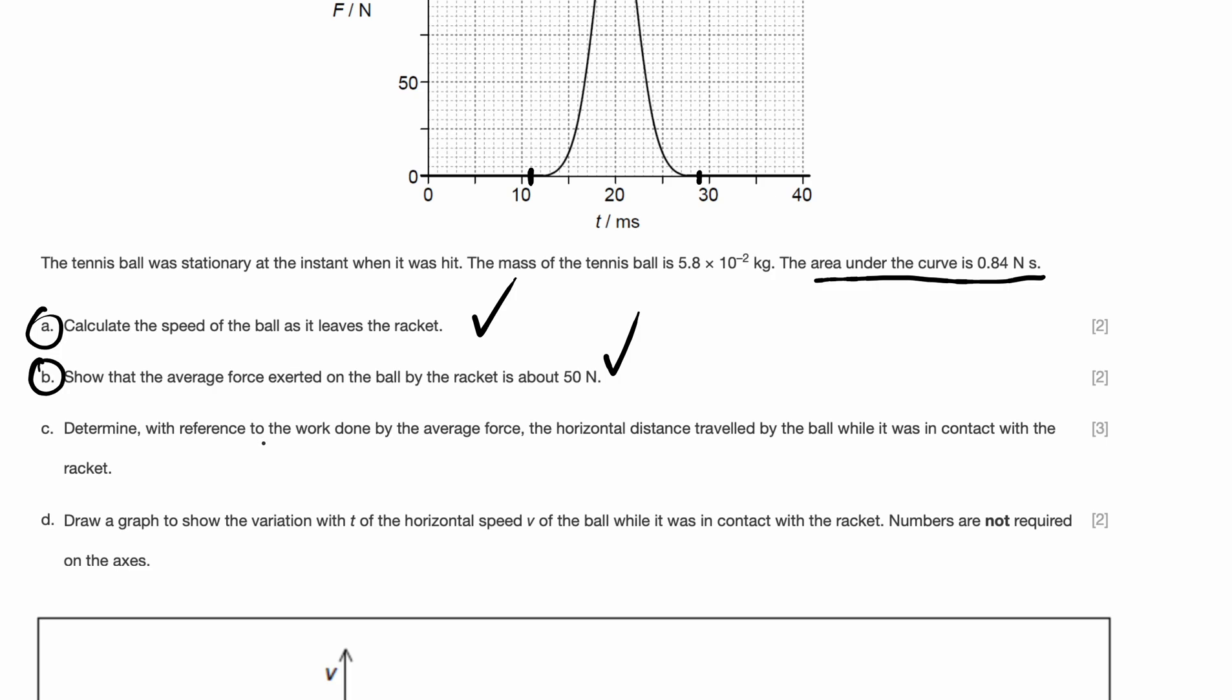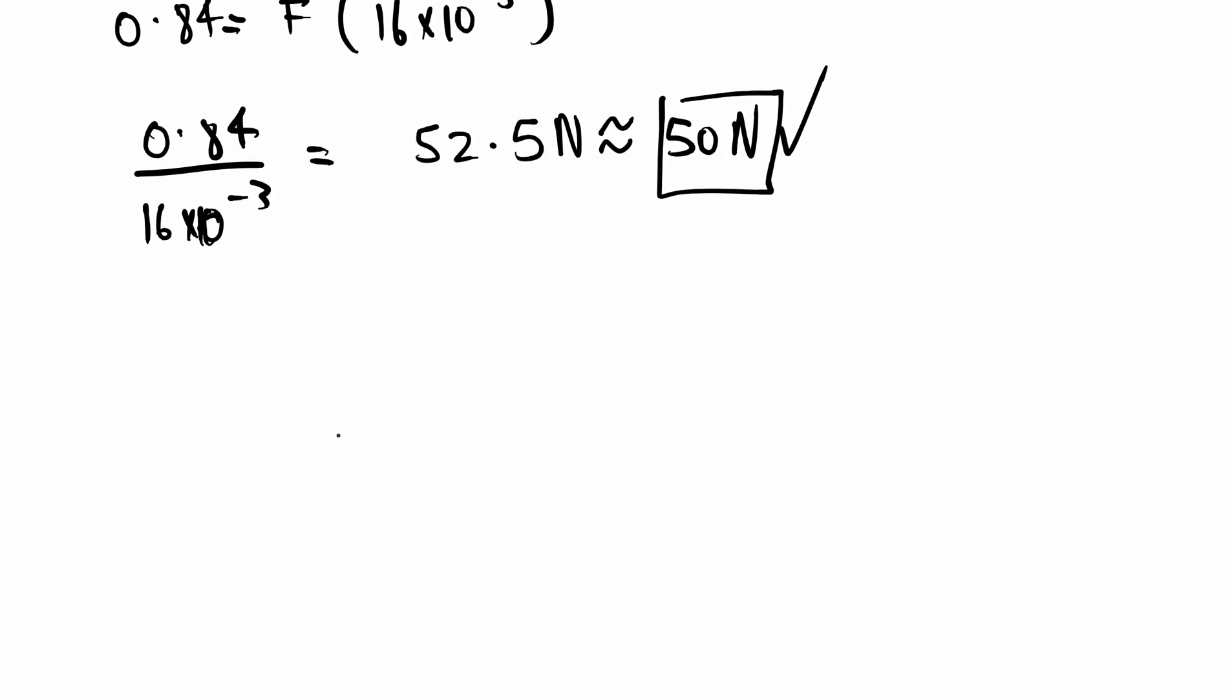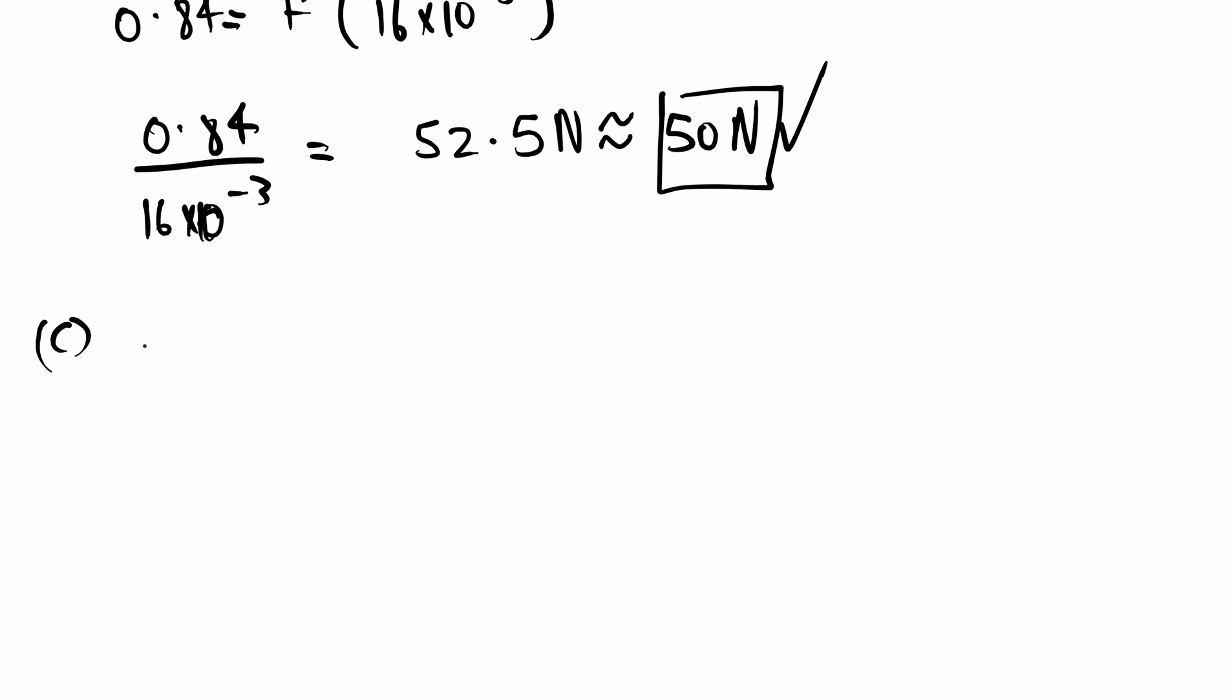Part C: determine with reference to the work done by the average force, the horizontal distance traveled by the ball while it was in contact with the racket. They're asking us to use work in reference to force. Using the data booklet, what is the formula for work? Work is equal to force times some displacement. But is there something else that work is also equal to? There's the work-kinetic energy theorem, which shows us that work is also equal to the kinetic energy, ½mv². Can I not equate the two? I get that Fs is equal to ½mv². So displacement is equal to kinetic energy divided by the average force.